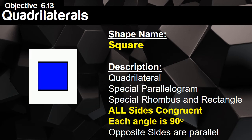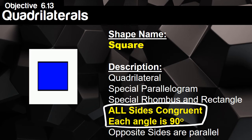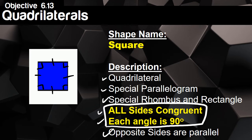Now we have our square. A square is not only a special parallelogram but also a special rhombus and rectangle, because it takes all the special parts from both and combines them. In our description: all the sides are congruent, just like the rhombus — one slash mark all the way around. Each angle is 90 degrees, just like the rectangle — little squares in the corners. And the opposite sides are parallel, marked with arrows.